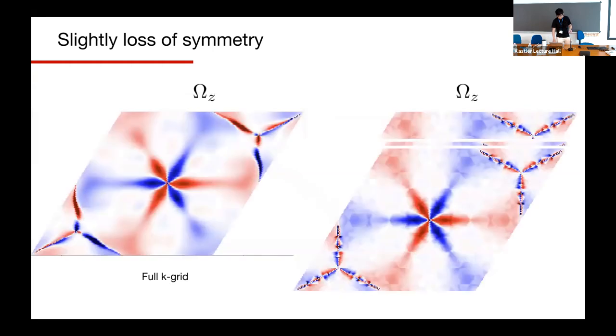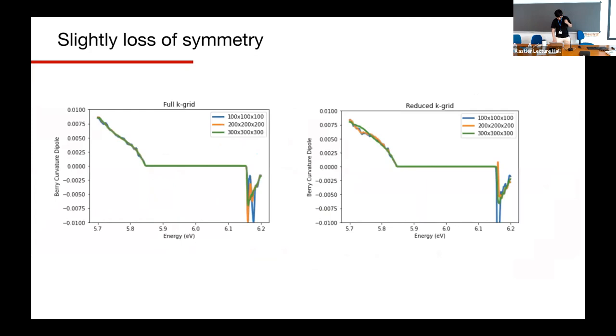Here is the Berry curvature dipole result based on different energies. At some energies, using reduced k-grid converges to a different result with the full k-grid. And the second problem is we can clearly see with only part of the k-points, the data is not smooth. The non-smooth data will give us a lot of noise when we evaluate the integral. That means we need more k-points to converge.